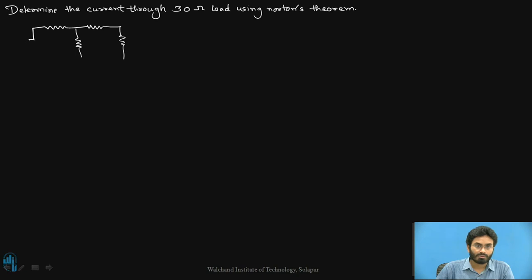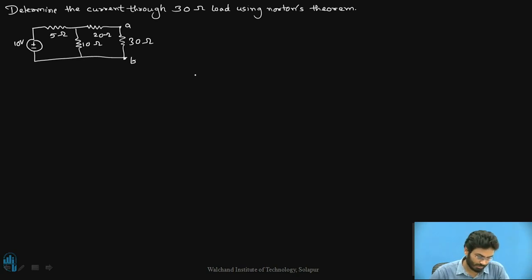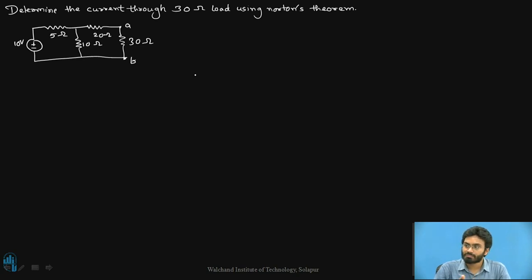Let's have a look at this particular circuit. We have 10 volts and a couple of resistors connected as shown. These are the two points A and B, and of course the load is connected across these two points where the value of the load is 30 ohms. Whenever we are trying to identify a Norton's equivalent circuit, we have possible ways: either it has only independent sources, a combination of dependent and independent sources, or only a dependent source. Currently, if you observe the circuit, we only have an independent source whose value is 10 volts.